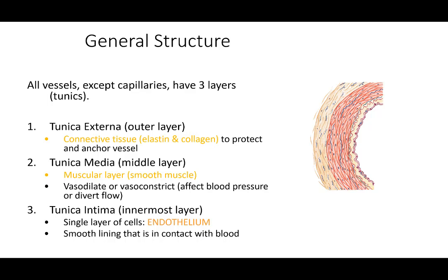The tunica media is the red layer shown here — it is a muscular layer made of smooth muscle. It is this layer that will vasodilate to lower blood pressure or vasoconstrict, which reduces the lumen size and increases blood pressure.